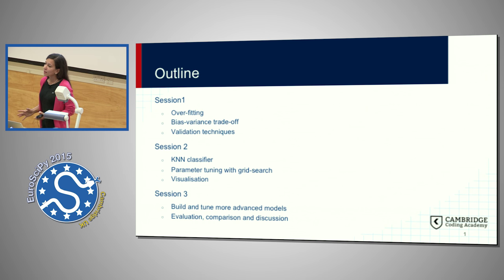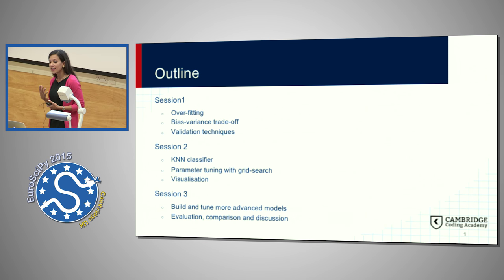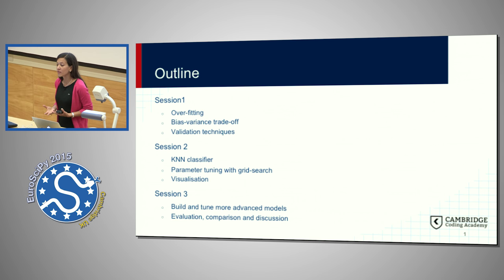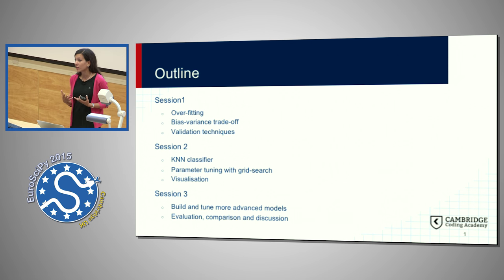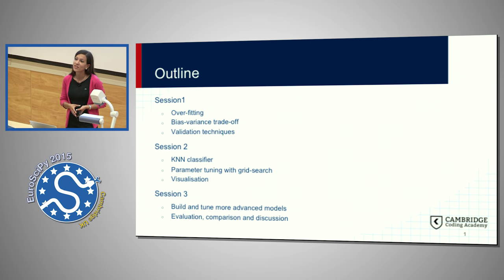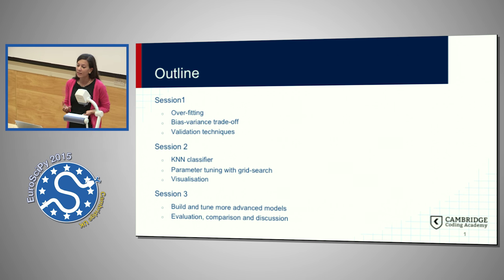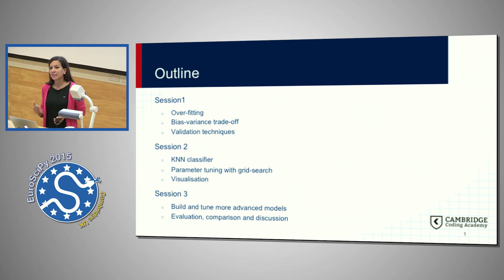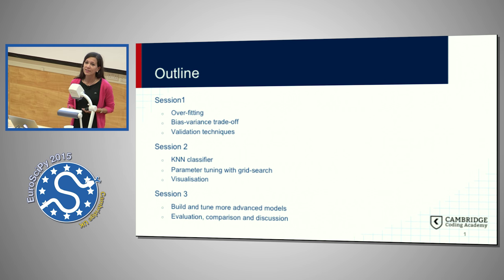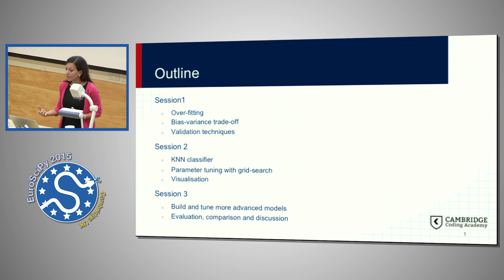A rough outline of how this workshop is going to take place - it's roughly split in three sessions. In the first one it's a little bit more theoretical where we go through the background of important concepts for machine learning such as overfitting and the bias-variance trade-off. We get to investigate different techniques, one by one, when it comes to validation and discuss their advantages and disadvantages with regards to bias and variance.